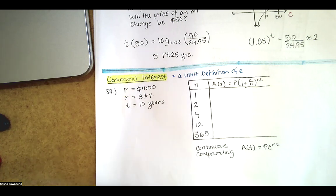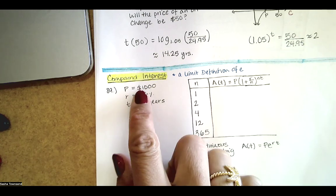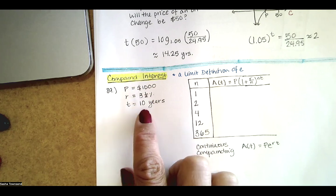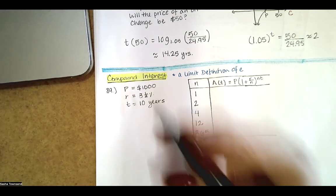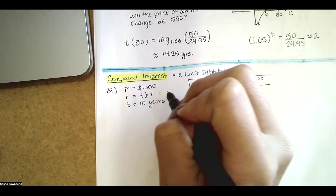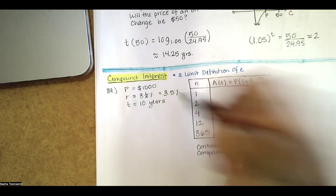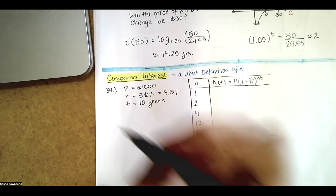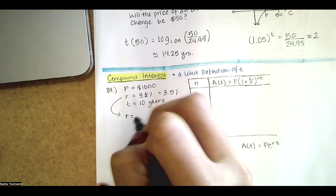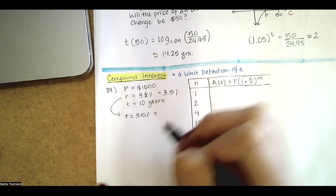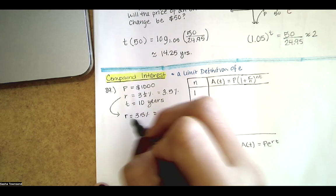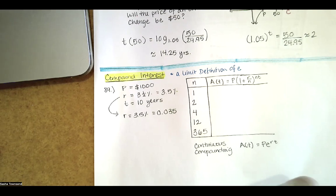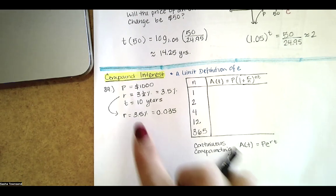Here's an example: when n equals one, p equals one thousand, r equals three and a half percent, and t equals ten years. We first write 3.5 percent in decimal form — when changing a percentage to decimal form, we move the decimal twice from right to left to make the number smaller — so the interest rate is 0.035.